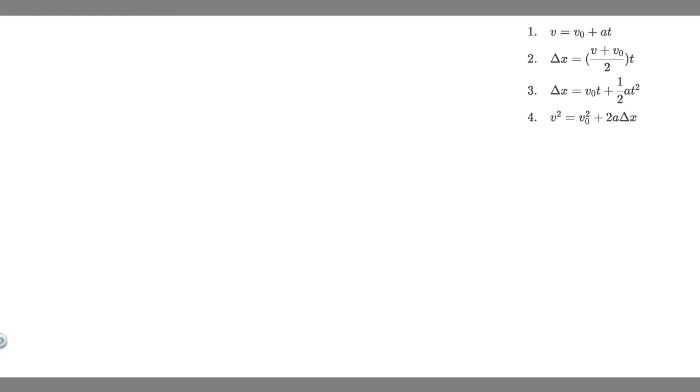In this problem, we're told the truck covers 40 meters in 8.5 seconds while uniformly slowing down to a final velocity of 2.8 meters per second. Find the truck's original speed and its acceleration.